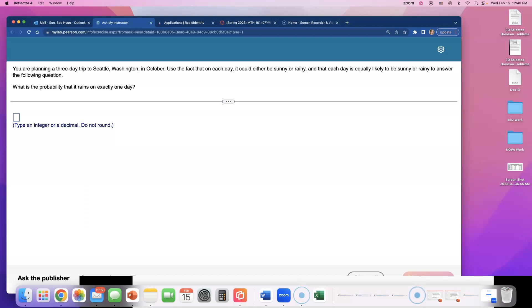You are planning a three-day trip to Seattle, Washington in October. Use the fact that on each day, it could be either sunny or rainy, and that each day is equally likely to be sunny or rainy to answer the following question. What is the probability that it rains on exactly one day?